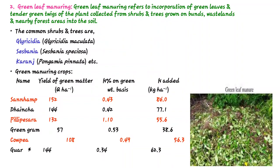Examples of green leaf manuring plants include Gliricidia, Sesbania, and Kharans — these are large trees. Now see some examples and their nutrient content. For sun hemp, the yield of green matter is given in quintals per hectare.